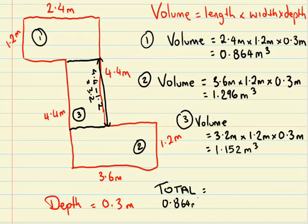So to work out the total volume we just add all these little volumes together. So adding them up we get 3.312 metres cubed.